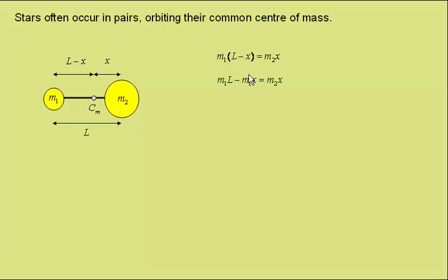Expanding out the brackets gives this expression, which we can rearrange to give this, and then factorise out the x's to get this expression. We can then rearrange to get the distance x from m2 to the centre of mass is equal to m1 times its separation L over the sum of the masses.